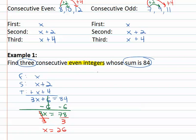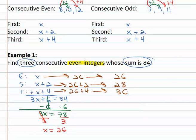But that's not our final solution because we're asked what are the three integers. The first integer is just x, just 26. The second integer takes the 26 and adds 2, that gives us 28. The third says 26 plus 4 and that gives us 30, and notice we have three even integers whose sum is 84.